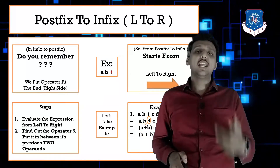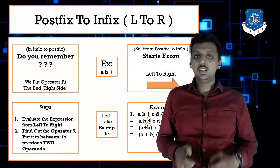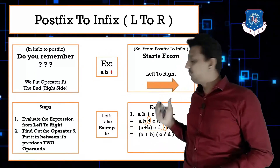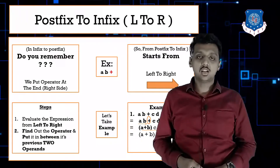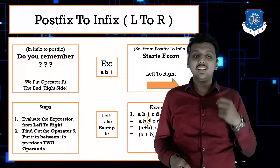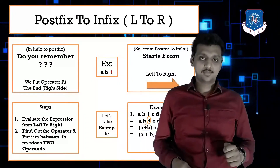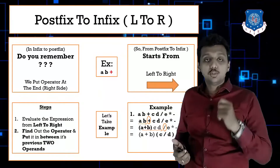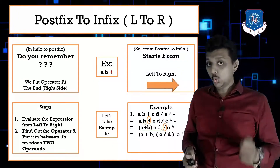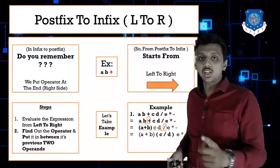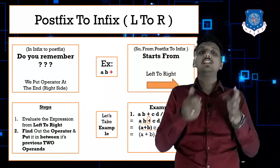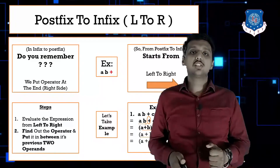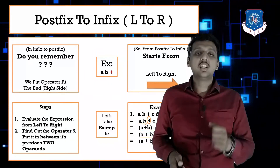Next we have 'e' and then '*'. Going left to right, I found star as the next operator. Put star between its previous two operands. The previous two operands are (c/d) and e, so put star between them: (c/d)*e.